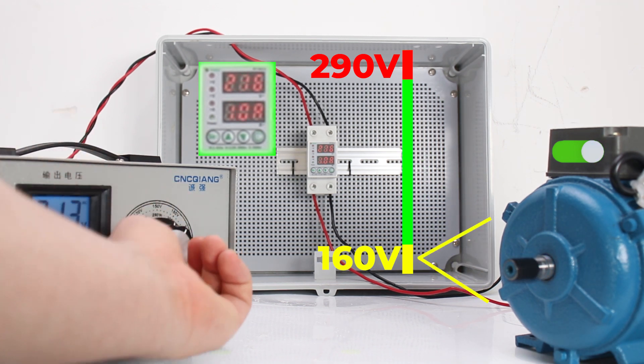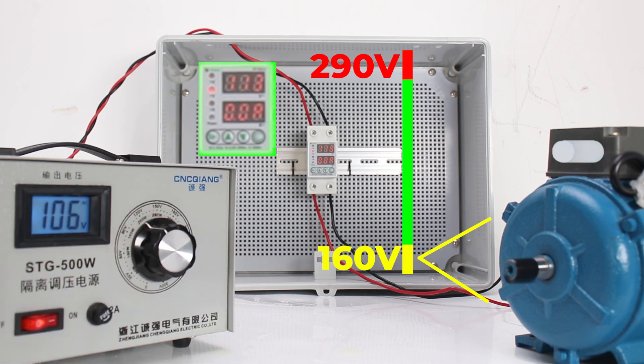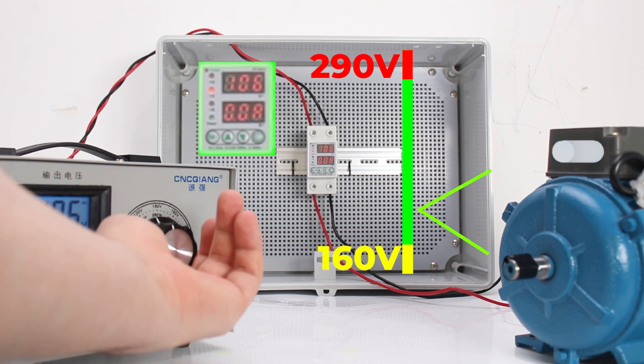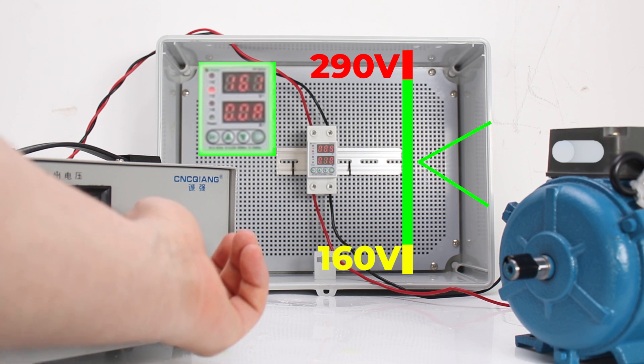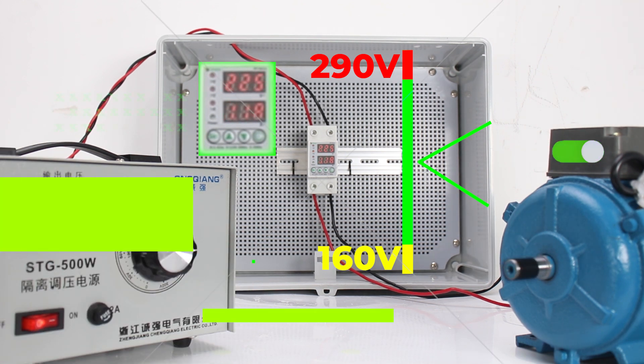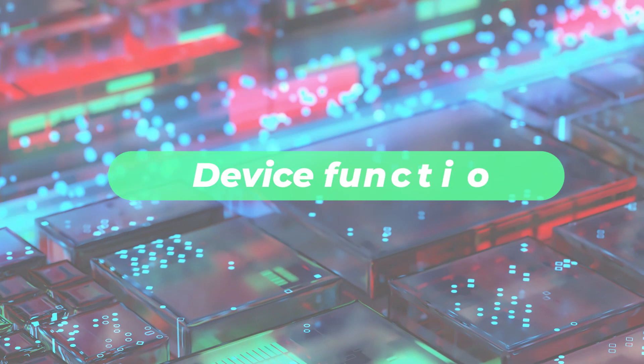Now we simulate a low voltage and see that the device is also turned off. Now we restore the voltage and the device has automatically turned on.